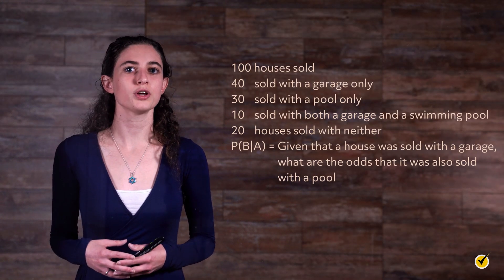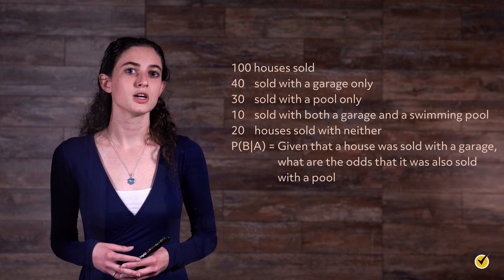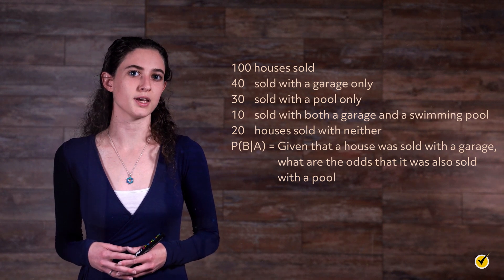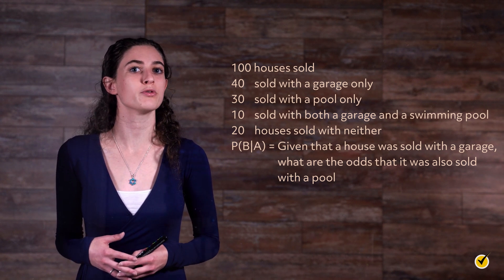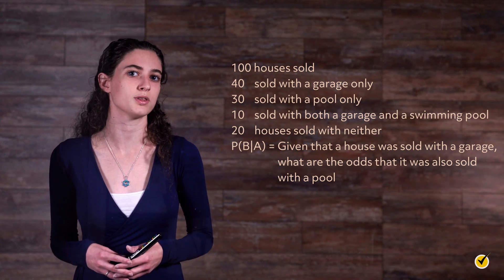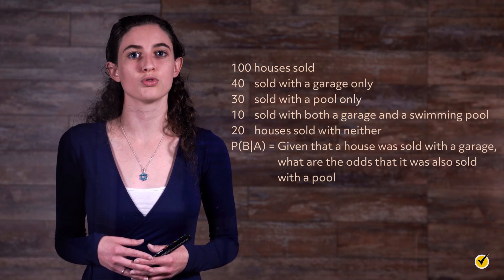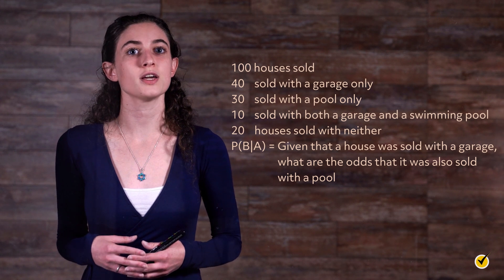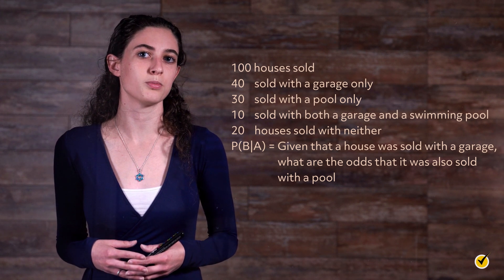Let's look at another example problem. Out of 100 houses sold, 40 were sold with a garage only, 30 were sold with a pool only, and 10 were sold with both a garage and a swimming pool, leaving 20 houses sold with neither. Given that a house was sold with a garage, what are the odds that it was also sold with a pool?